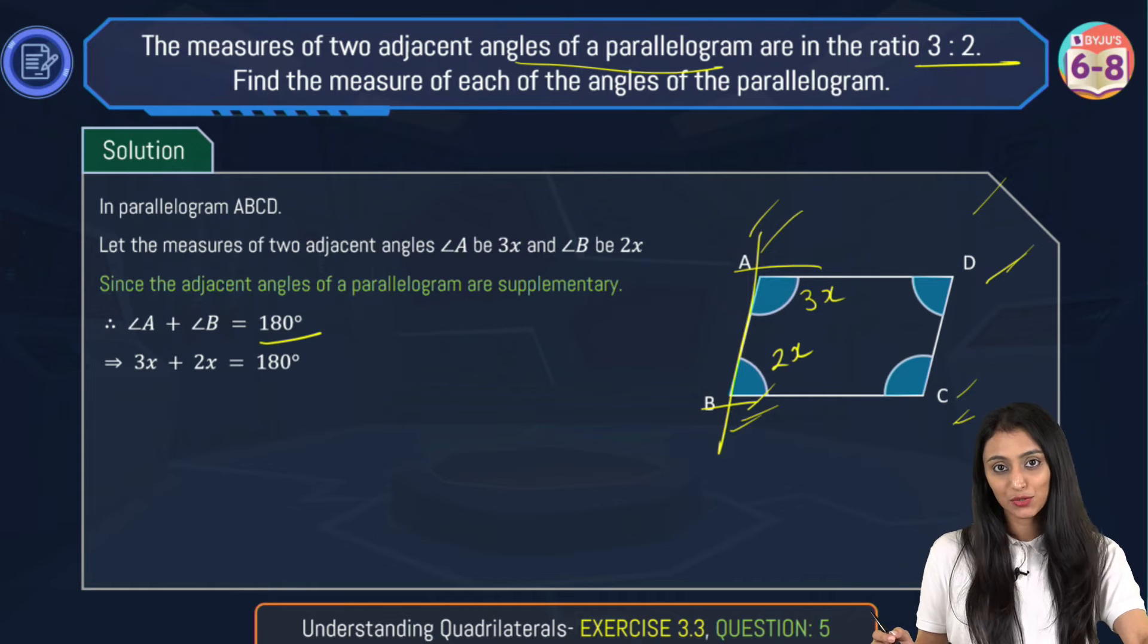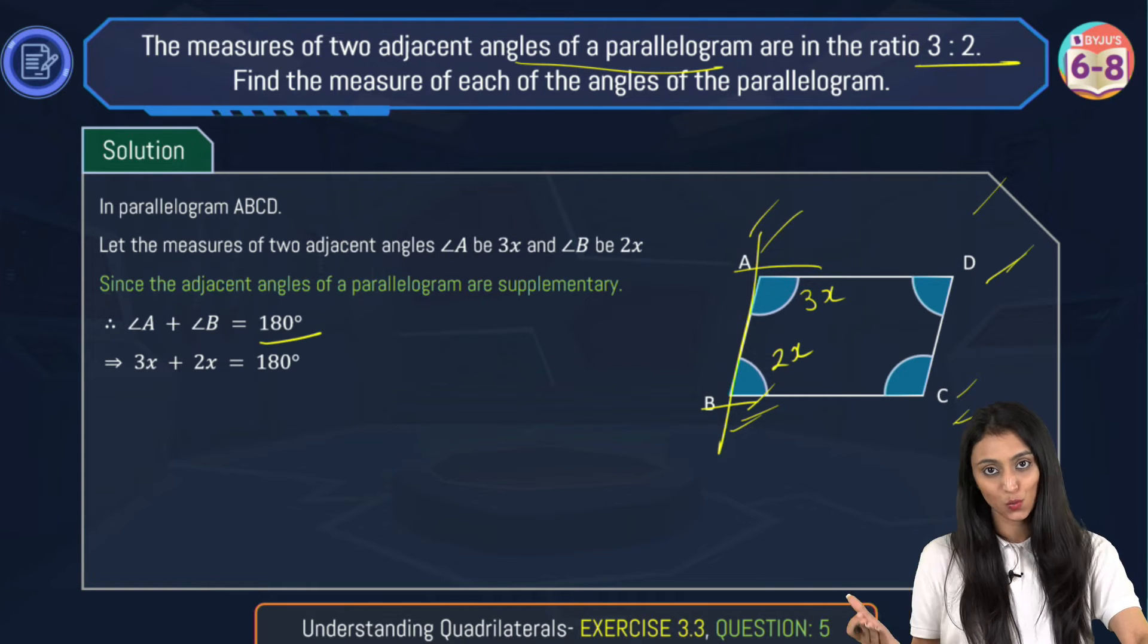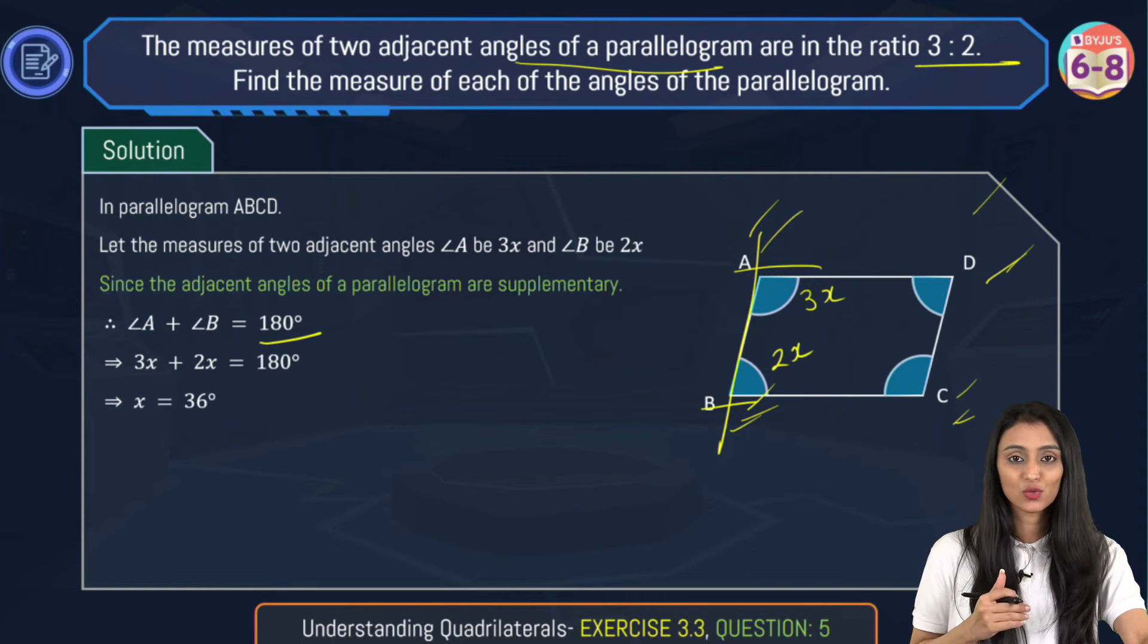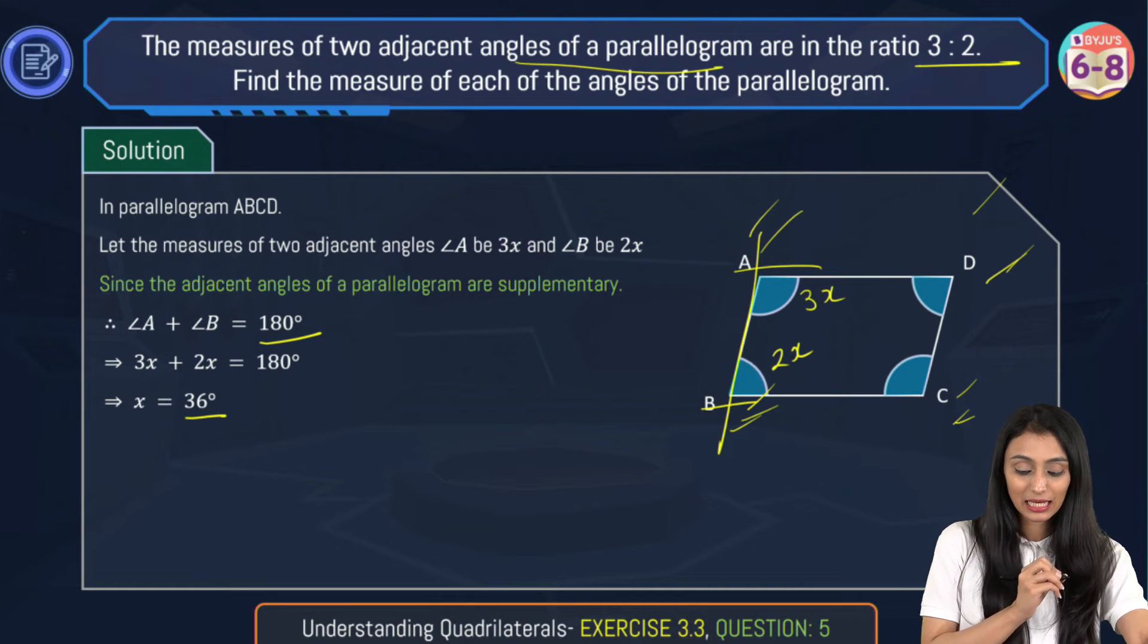Let's put these values here. 3x plus 2x equals to 180 degrees. You get 5x equals to 180 degrees. So x is going to be equals to 36 degrees.